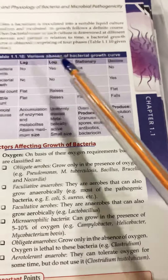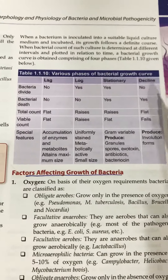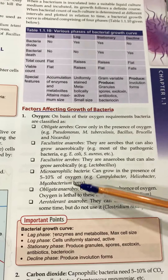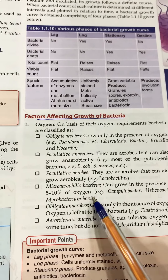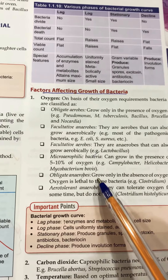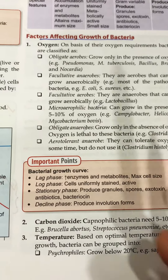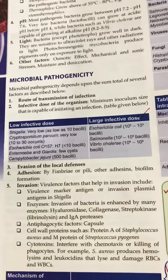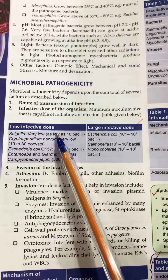There is a table that will simplify your understanding of the bacterial growth curve — do have a look. Go through the various factors, and out of these, microaerophilic bacteria and obligate anaerobes are important. The important points regarding the bacterial growth curve need to be done.